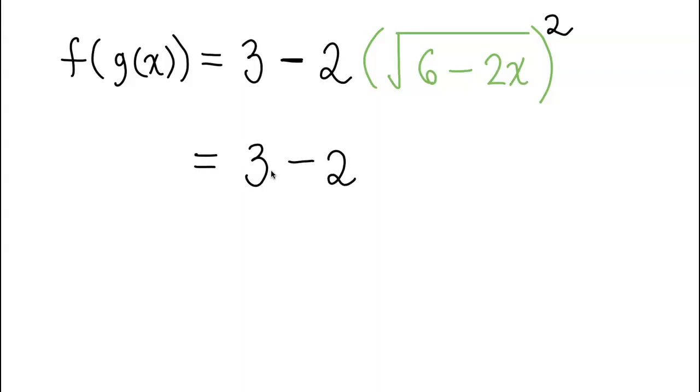But if you take a look right here, we have a square root and squaring. What will happen to those two? They will cancel out. So when that cancels out, we will have that 6 minus 2x coming out, and we now can distribute.